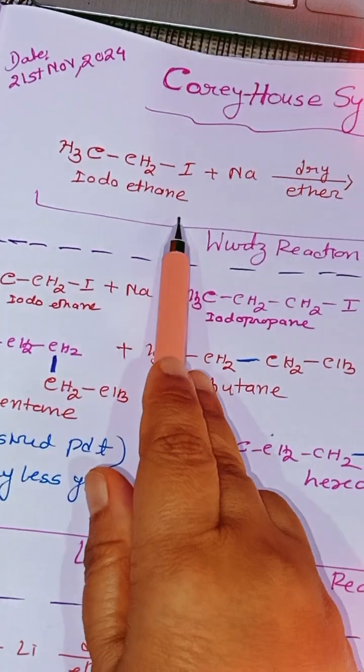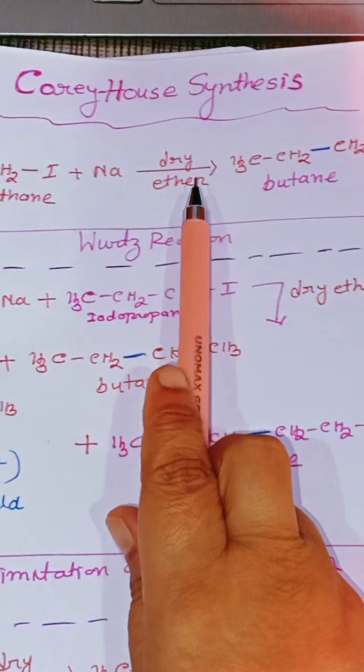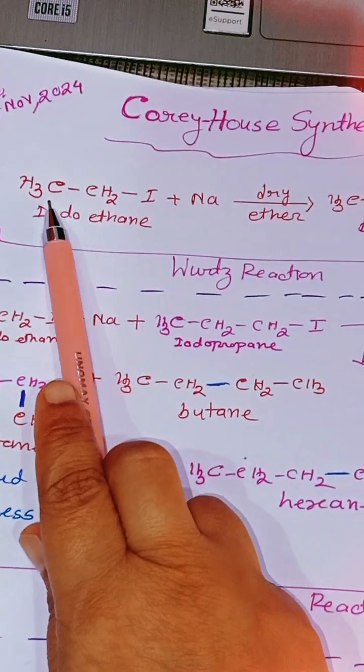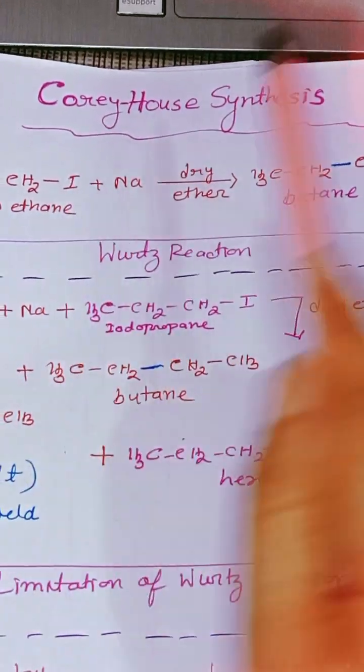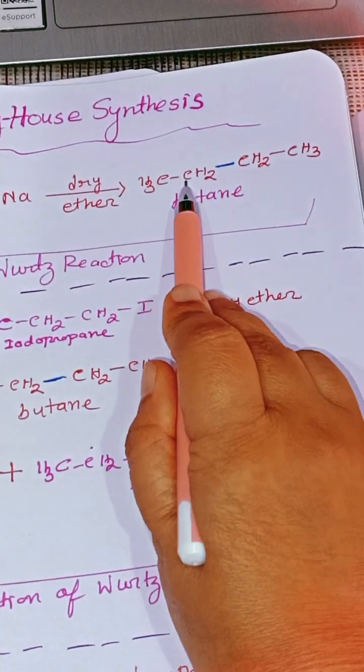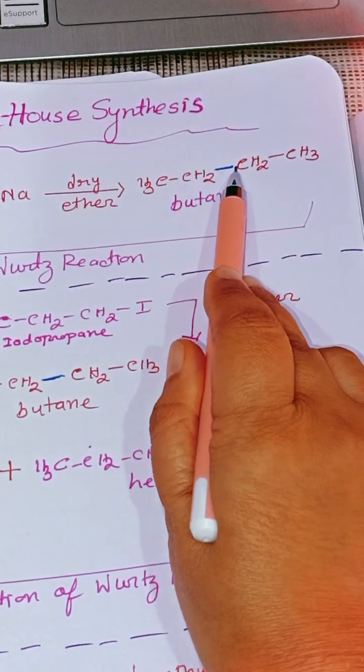In the Wurtz reaction we use symmetrical alkyl halide, sodium as a reagent, and dry ether as a solvent. These two alkyl groups like ethyl groups combine through coupling reaction with carbon-carbon bond formation. Two ethyl groups combined, this blue bond is the new carbon-carbon bond, and we get butane.